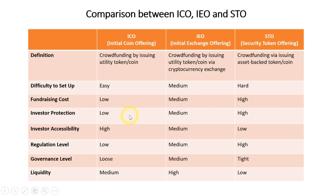Looking at investor protection: ICO is known to have a lot of scams — people say that 90% of ICOs are scams, which can be quite true because it has very low investor protection. IEO has less of that because the project is supported by a cryptocurrency exchange, which is generally a very trustworthy organization, so the chance of it being a scam is a lot lower. For STO, it is the most secure for investors because it has to follow the securities law of the country.